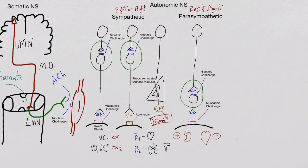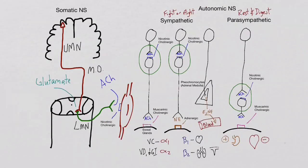And lastly, on the sympathetic nervous system track that goes to the sweat glands, acetylcholine will be released and stimulate the muscarinic cholinergic receptors to promote sweating. Well, that's it for this video. I hope this helps you.